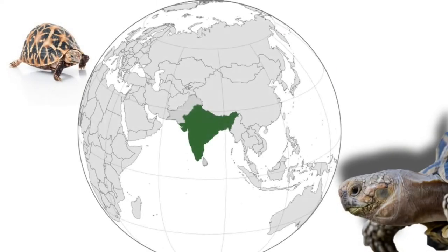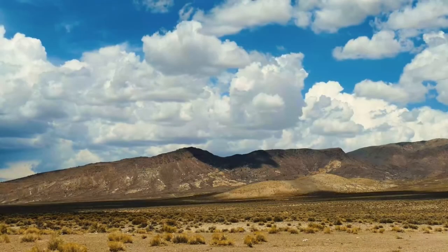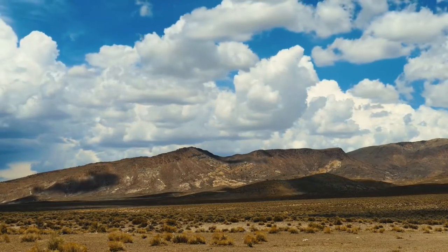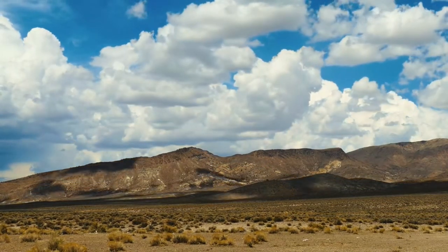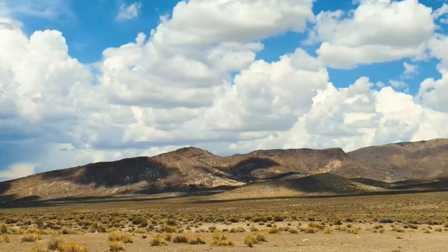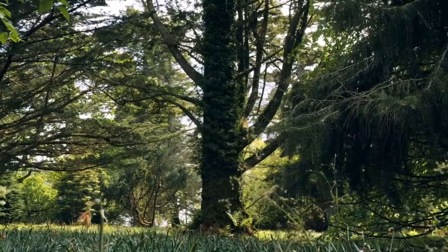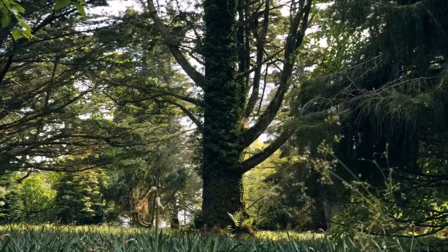The Indian star tortoise is distributed throughout India, except for Lower Bengal, extending west to Sindh Province, Pakistan, and Sri Lanka. Its habitat is varied due to its ability to adapt to different environments. Some populations have successfully established themselves in regions with semi-arid climates. However, the most common habitats are grasslands and forests in which periods of drought and torrential rains alternate.